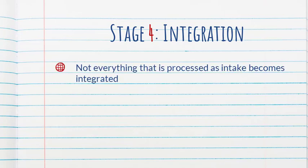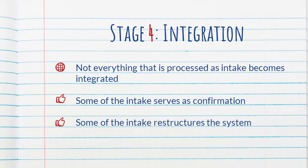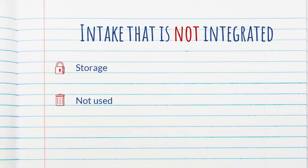Because once again, not everything that is processed as intake becomes integrated. Some of the intake serves to confirm, strengthen connections as they are integrated. Some of the intake helps to restructure the system. And then there's two other possibilities. And this is why not all of the intake becomes integrated. One of them is that it gets put into storage or the learner does not make any use of it.